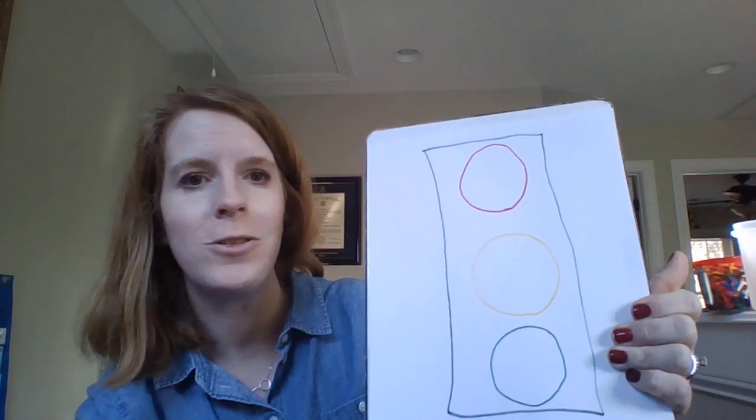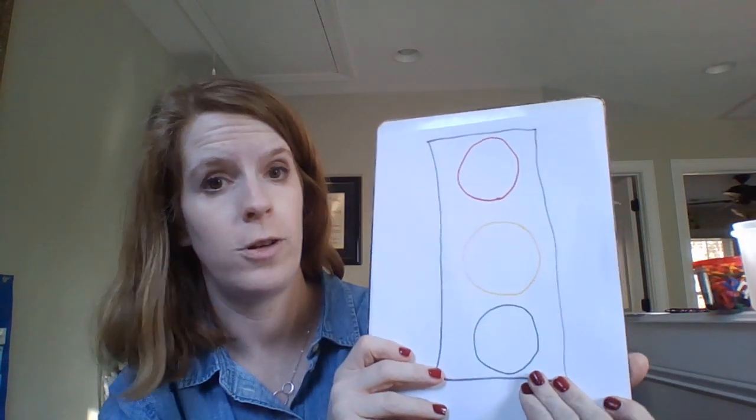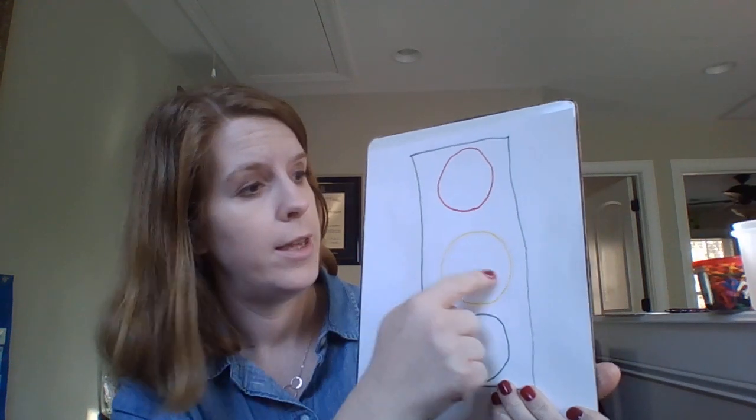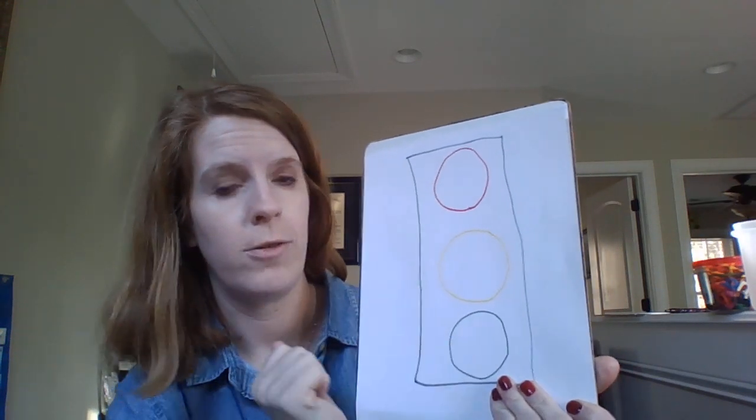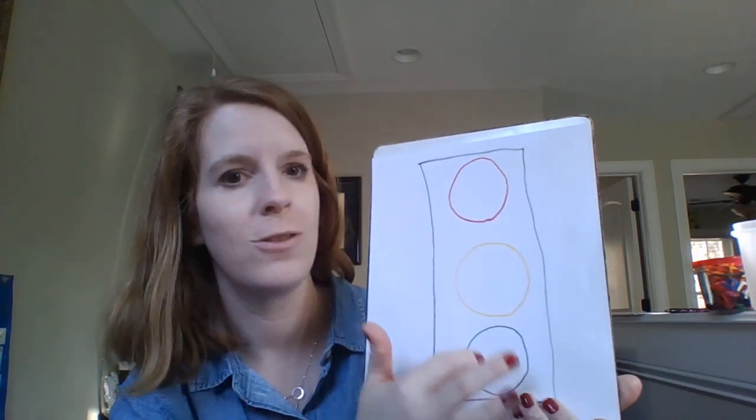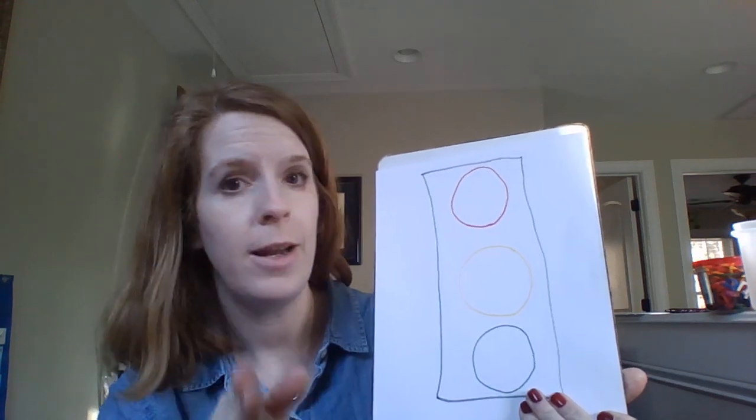All right, so you have your traffic light. Now what I want you to do is color in your circles. I want you to color the red circle in, the yellow circle in, and the green circle in. Color them in, make them nice and pretty, fill in your circles, don't leave any blank spaces.